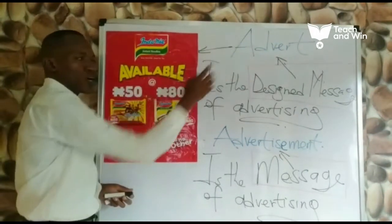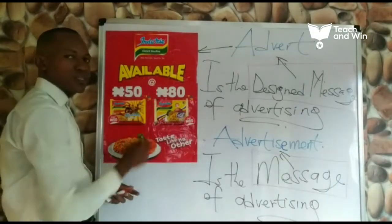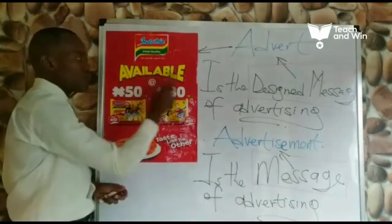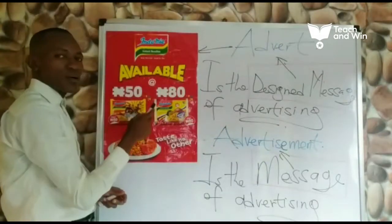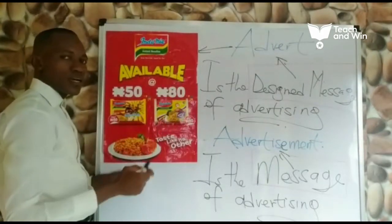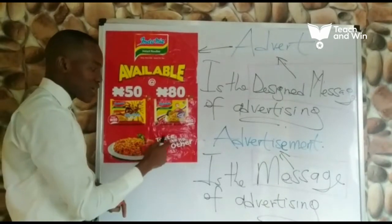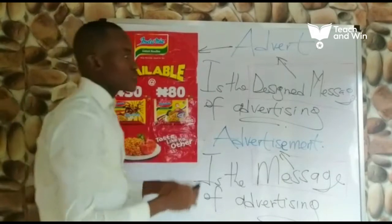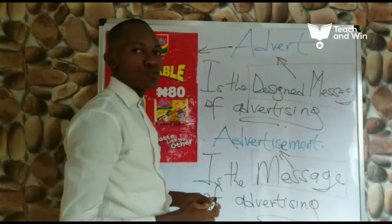Your advertisement, on the other hand, is the message — the content of your advert. For example, the advertisement here is that Indomie is available at 15 naira or 18 naira, and if you eat it, it tastes like no other. So with this, we come to the end of today's series.